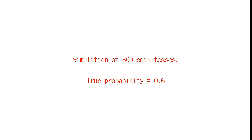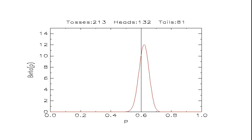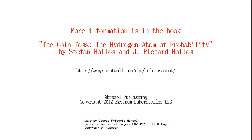As you get more tosses, the distribution gets more narrow, and the peak starts to fluctuate around the true value of 0.6.